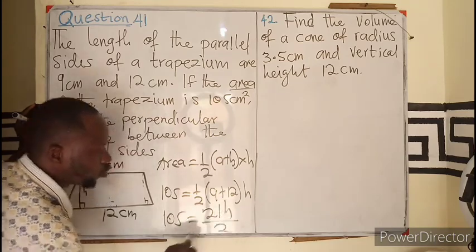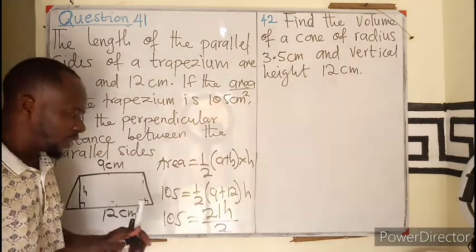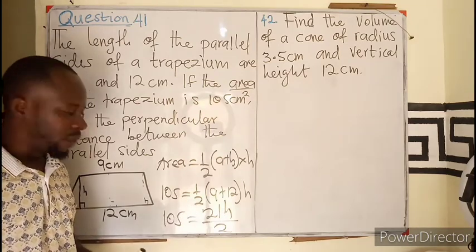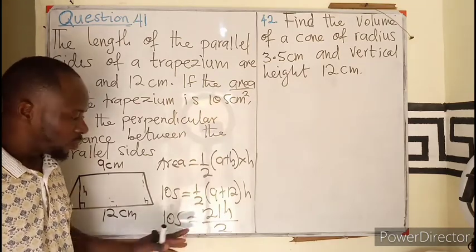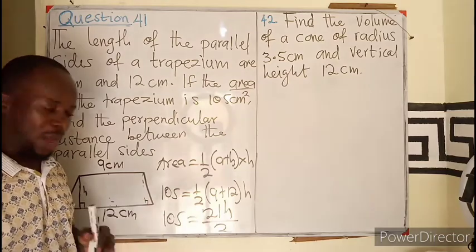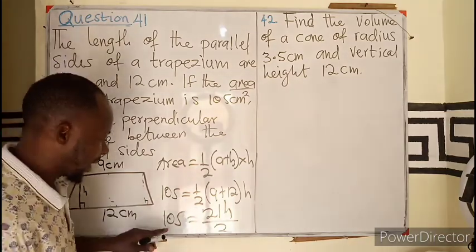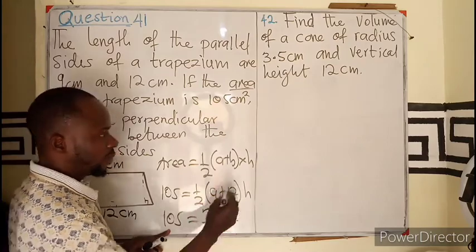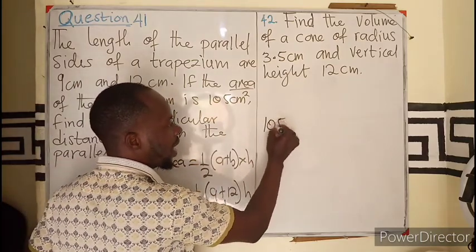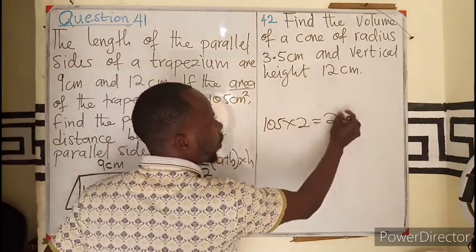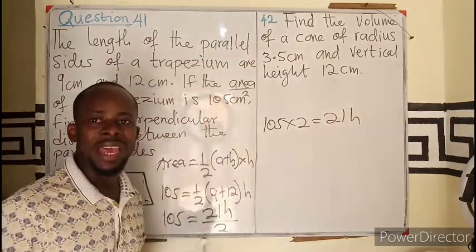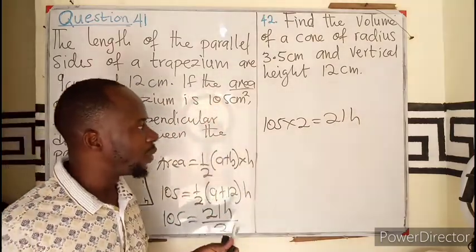So in the bracket I have 21. So I will be having 105 equals to 21H all over 2. So this becomes a simple linear equation which involves a fraction. So I will use the LCM to multiply or cross multiply.